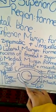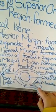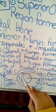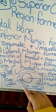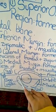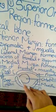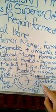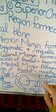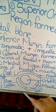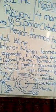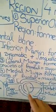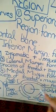The zygomatic and maxilla bones form the inferior margin of the orbital region. On the lateral side, the processes of both the frontal and zygomatic bone form the lateral margin. On the medial side, the processes of the frontal and maxilla form the medial region of the orbital region. Those were the four margins. Coming now to the walls — you will have a roof, a floor, a lateral wall, and a medial wall.